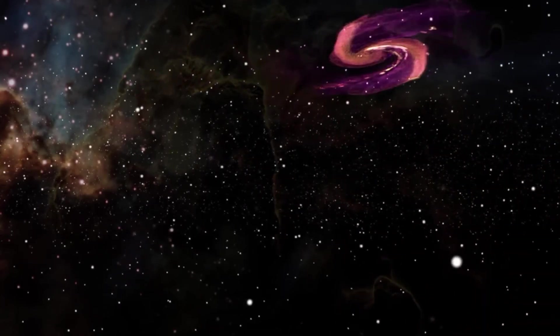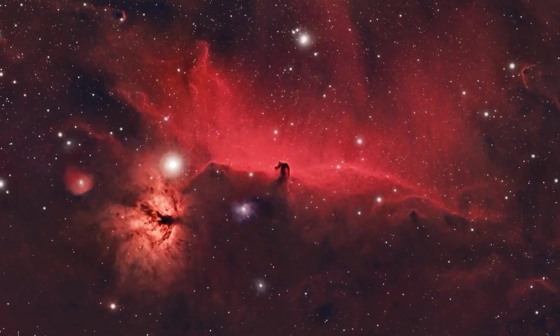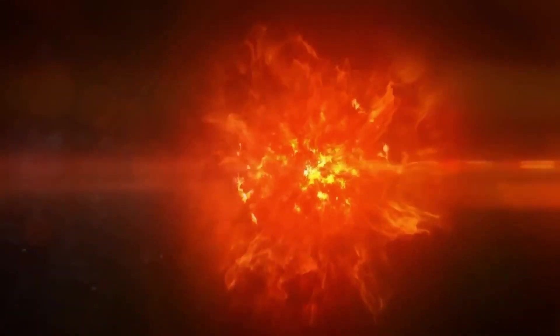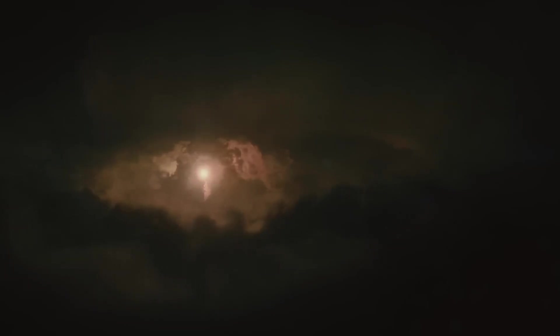When a star, nearing the end of its life, is surrounded by a substantial disk of material, a specific kind of supernova arises. A shockwave is generated after the initial explosion of the supernova and strikes that disk. The shockwave causes the disk to become extremely hot, which in turn leads the disk to generate a large amount of X-ray radiation.